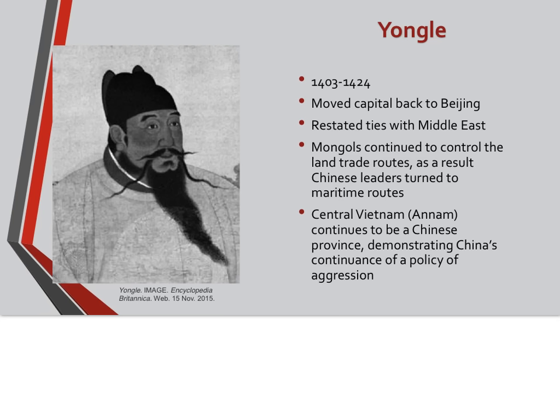The next emperor is Yongle, ruling from 1403 to 1424. He moved the capital back to Beijing from Nanjing and reinstated ties with the Middle East. However, Mongols continued to control land trade routes, and as a result many Chinese leaders turned to maritime routes. Central Vietnam, also known as Annam — the interior of Vietnam — continued to be a Chinese province, demonstrating China's continuance of a policy of aggression.